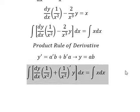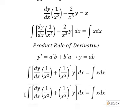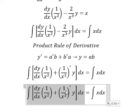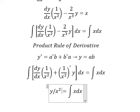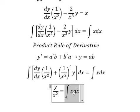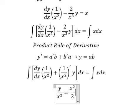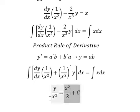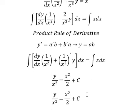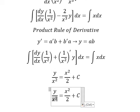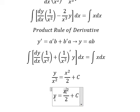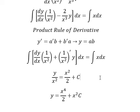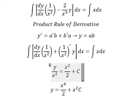The integration of the right side gives us y over x squared equals x squared over 2. Now we multiply both sides by x squared to get the final answer. This is the end — thank you for watching.